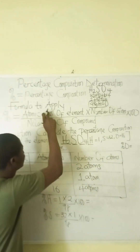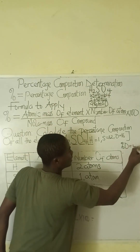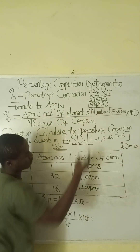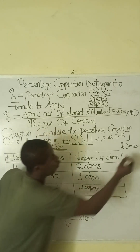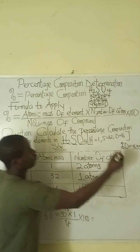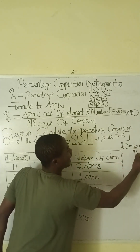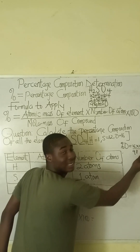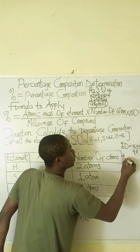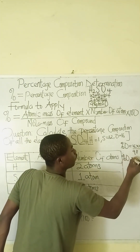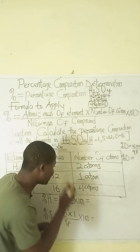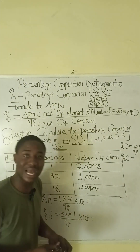Percentage composition of oxygen = (atomic mass of oxygen × number of atoms of oxygen) / molar mass × 100 = (16 × 4) / 98 × 100.